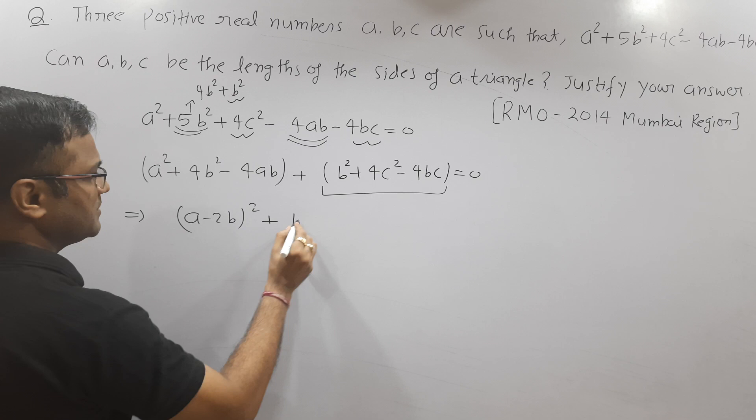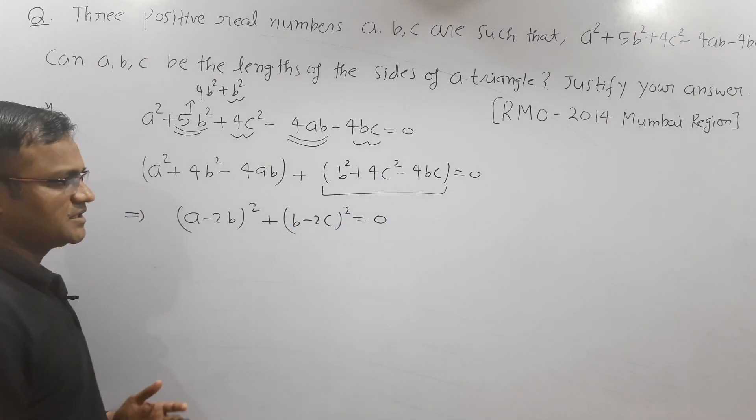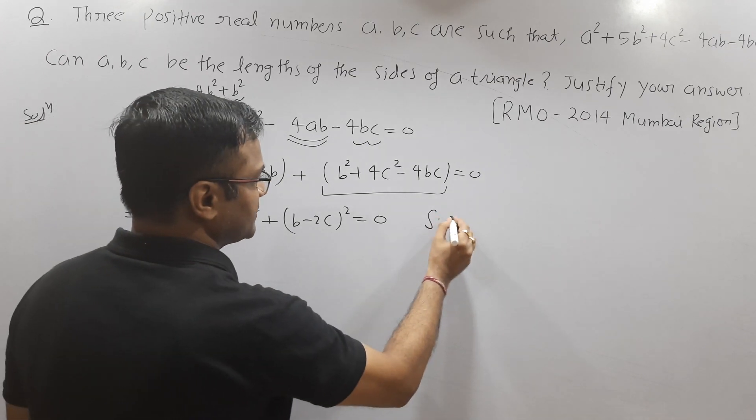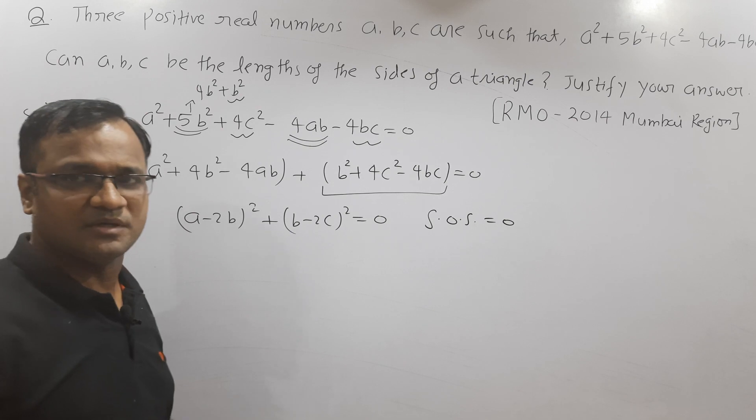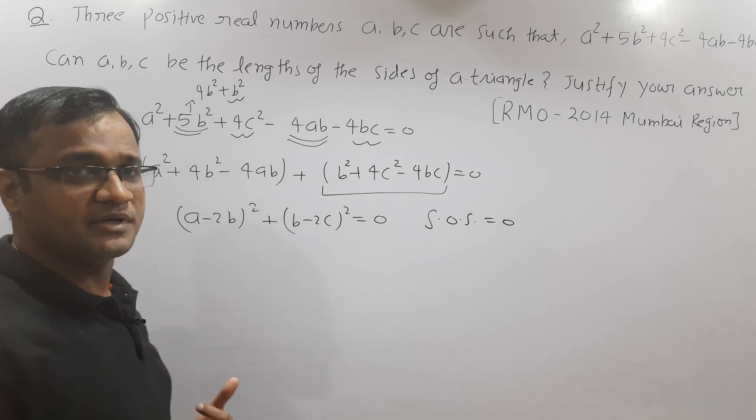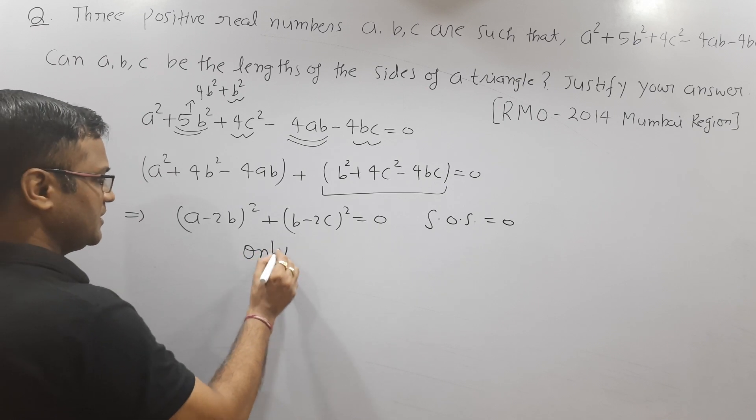This is a picture when sum of squares becomes zero. We know that whenever the sum of squares becomes zero, then each bracket quantity must be individually zero. The only possibility is a - 2b = 0 and b - 2c = 0.